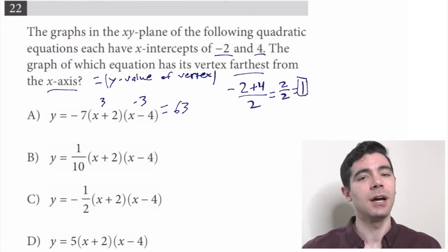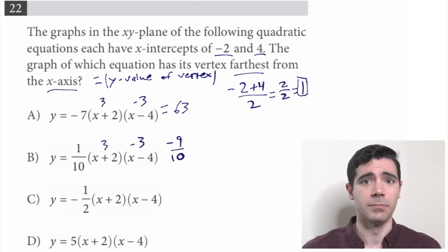B has 1 tenth times—oh, it's the same two roots, that's nice. So 3 times negative 3, negative 9 times 1 tenth is negative 9 tenths, which is cool and all, but not nearly as big as 63. So it's not B.